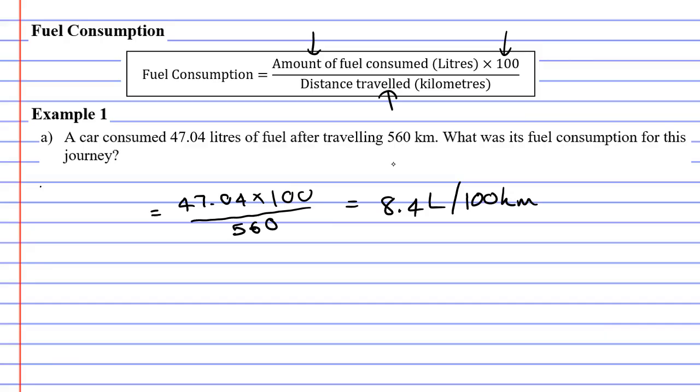So we're going to write 8.4 litres per 100 kilometres. And what this means is that every time you travel 100 kilometres, your car is going to burn 8.4 litres of petrol. Whenever we calculate fuel consumption, we always like to know how many litres of fuel that we are using per 100 kilometres.